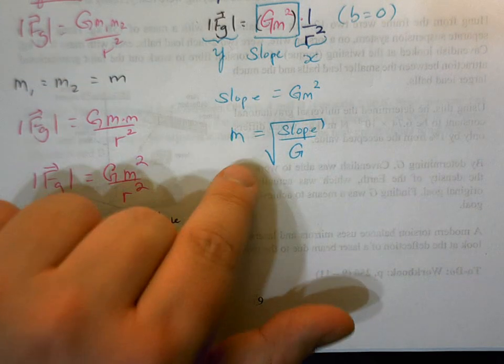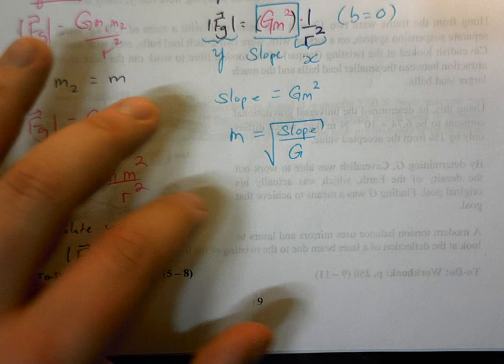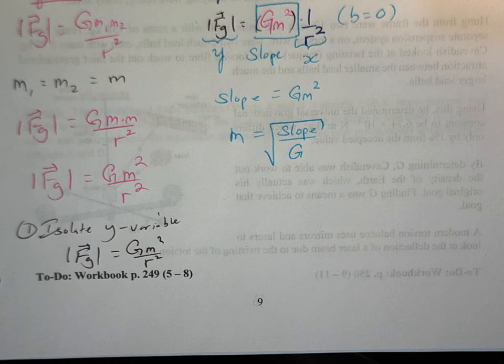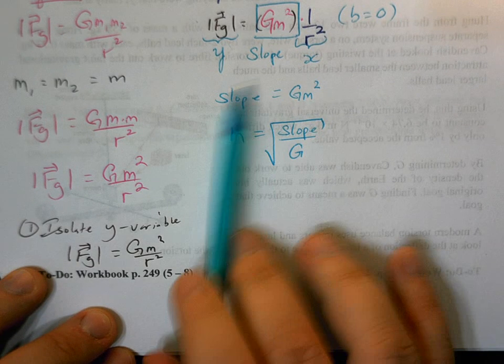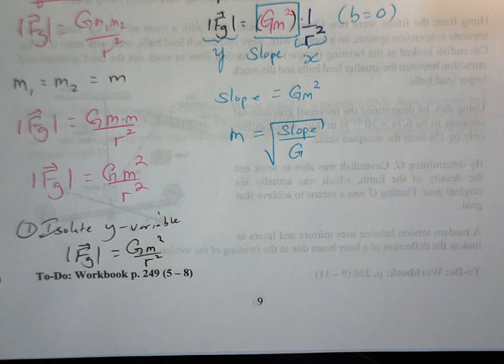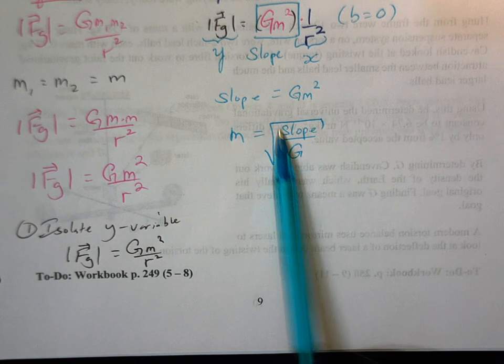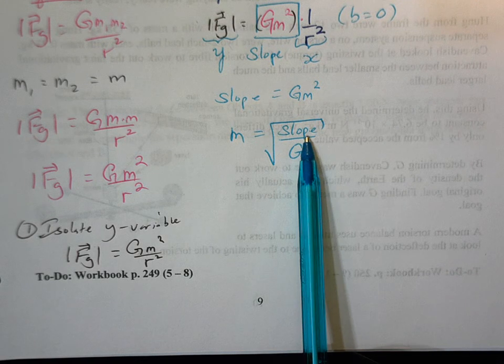So this is the hardest part of the question is to actually get an equation that relates something we can calculate on the graph to things to the act and relate that to the actual equation in question. So that mass of this object is going to equal slope divided by G.